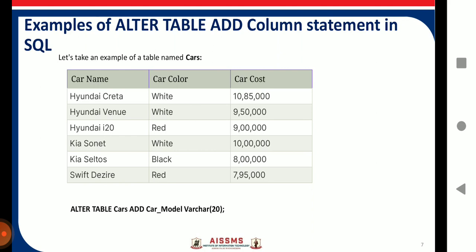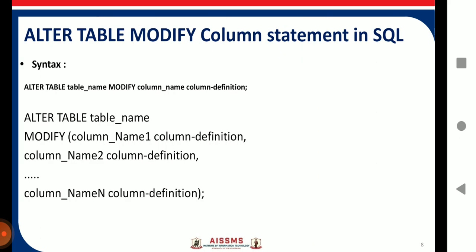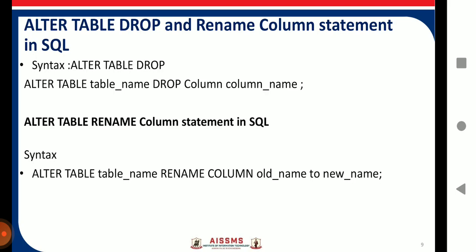The next command is ALTER TABLE MODIFY. If after creating a table you want to change the data type of a column or apply a constraint, you can modify it using the MODIFY statement. The syntax is: ALTER TABLE table_name MODIFY column_name column_definition. In this way you can modify the existing column.